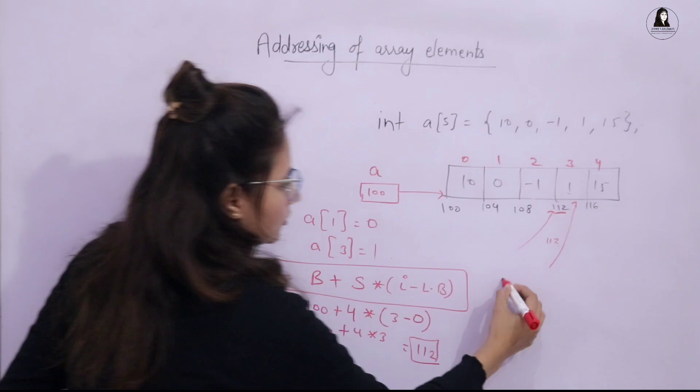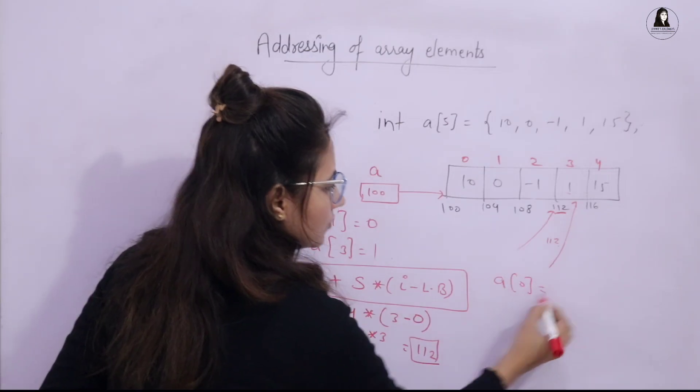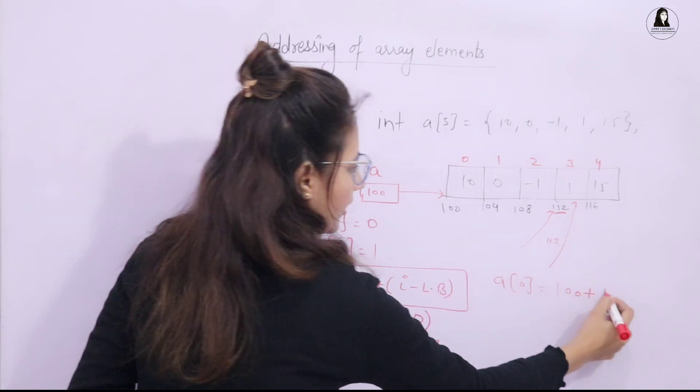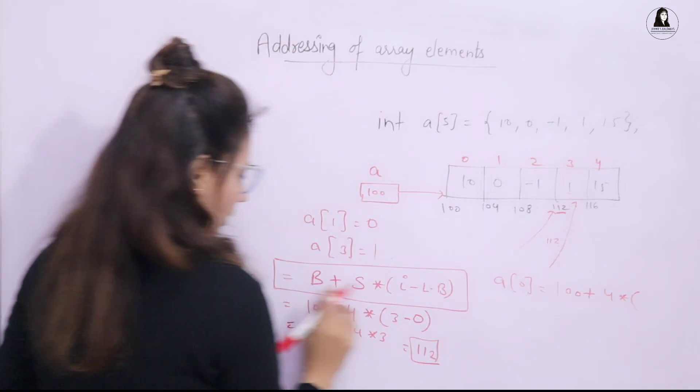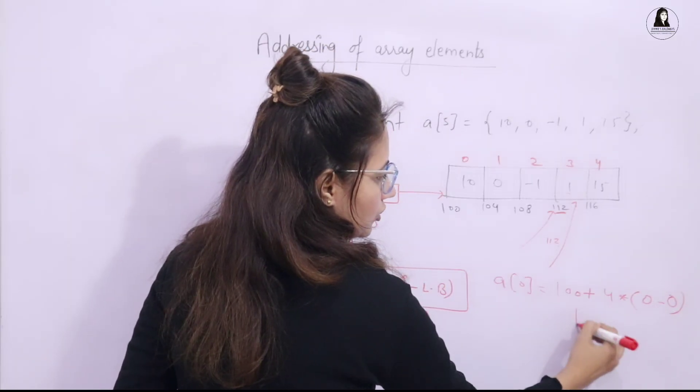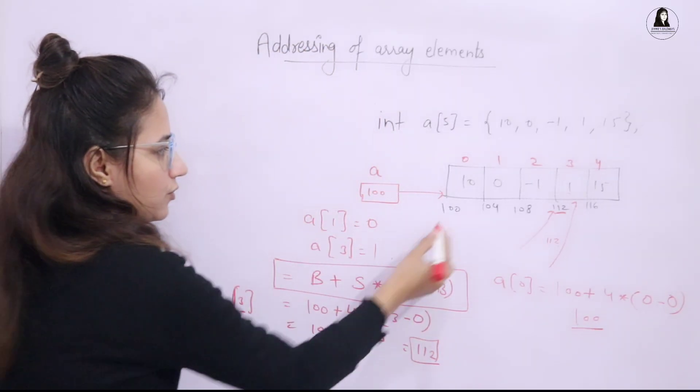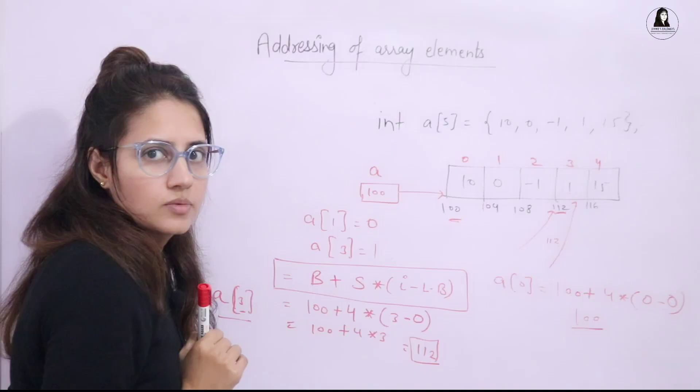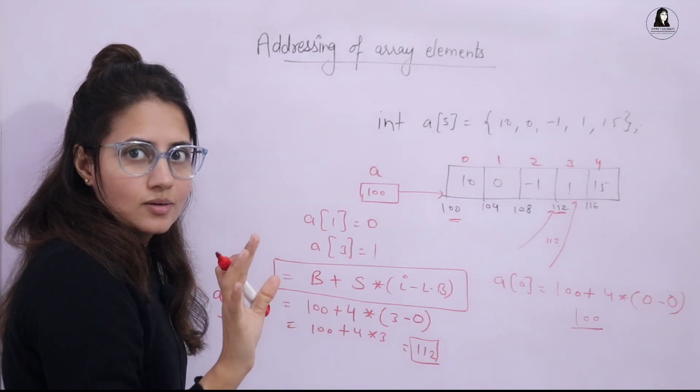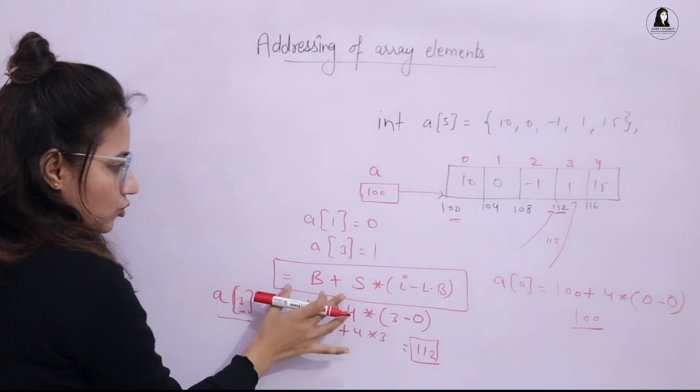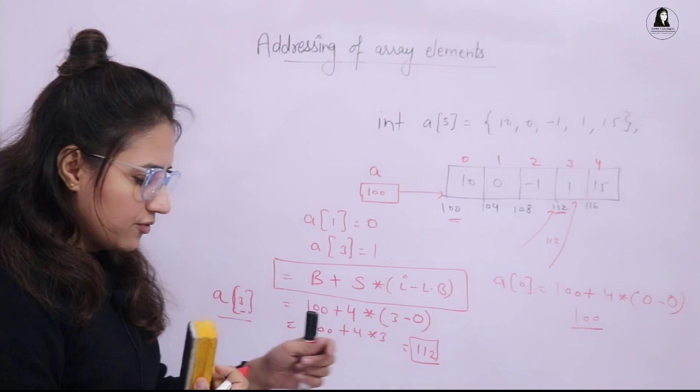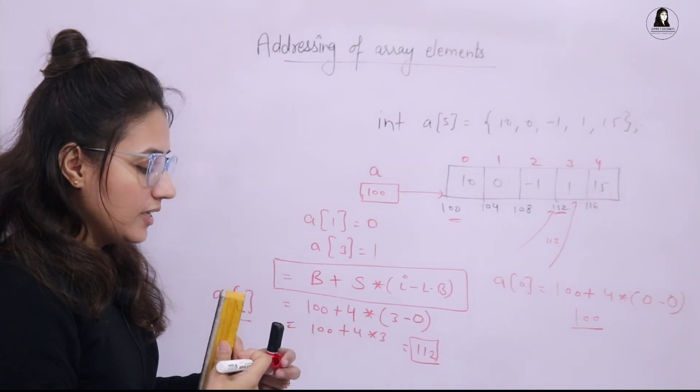You can take any, suppose I am taking A of 0. So base address 100 plus size 4 bytes into I is what? Index 0 minus lower bound is also 0. So this would be 100 only. And we know A of 0, the address of A of 0, this element is 100 only. So this formula you need to remember if you want to calculate the address of any array element, 1D array.